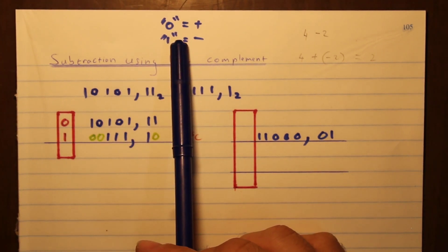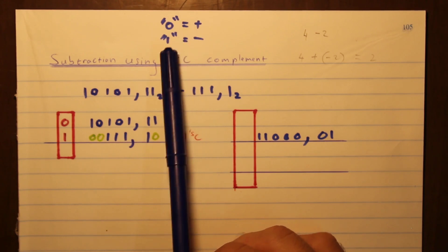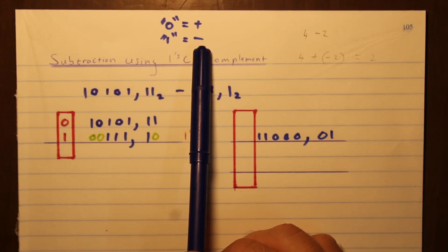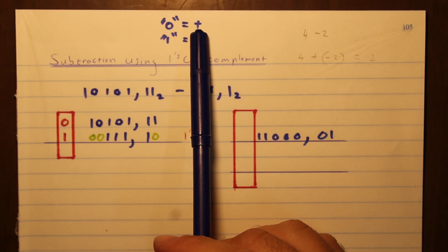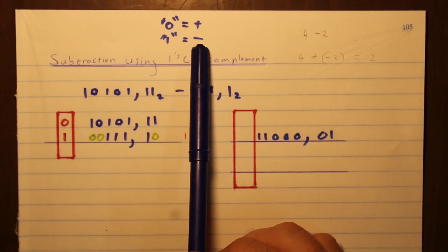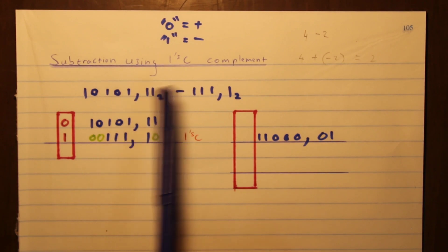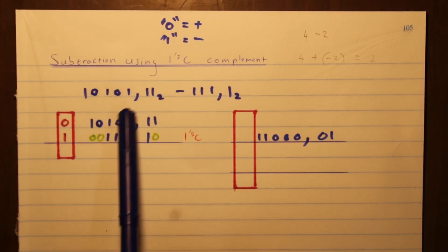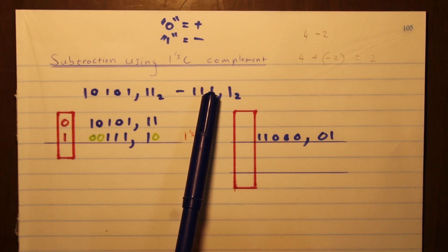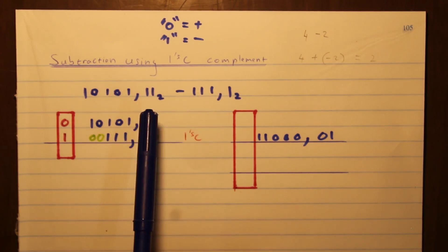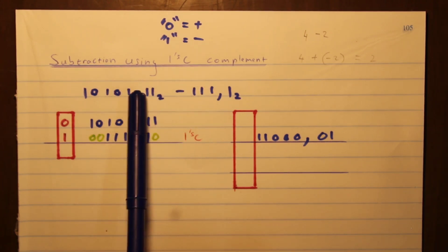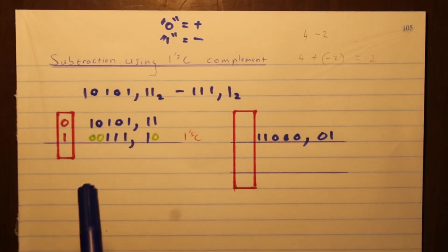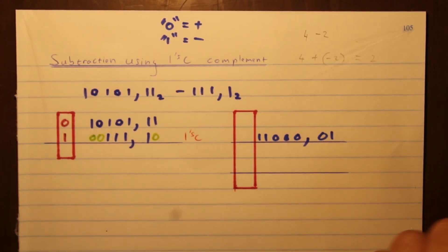First of all, zero equals positive and one equals negative — so to the computer, zero is a positive sign and one is a negative sign. Now looking at these two numbers, you can see clearly that this number is bigger than this number, so if I subtract the smaller number from the larger number the answer is definitely going to be a positive number. From the beginning you can already know that the sign of the answer is going to be a zero.